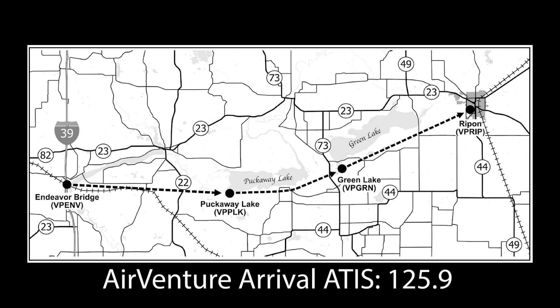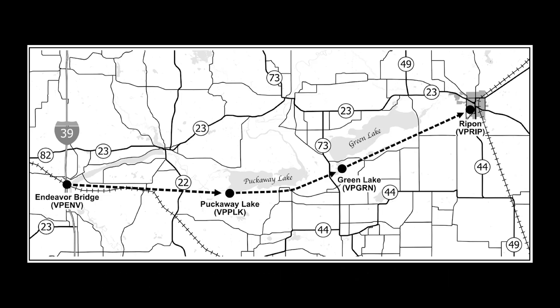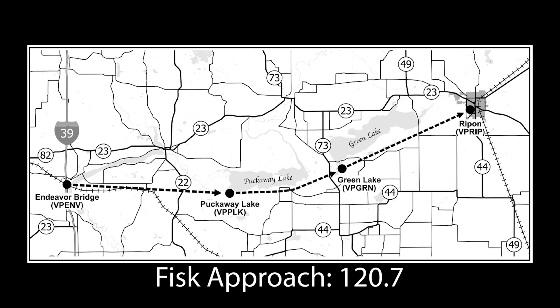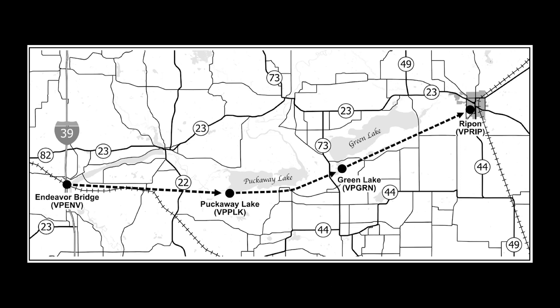When within 100 miles of Oshkosh, you want to listen to the AirVenture arrival ATIS, 125.9, and verify that the Oshkosh airport is open and accepting your type of aircraft. Otherwise, you'll need to divert to a different airport. The ATIS will also specify the transition starting point currently being used. Then you should listen to the FISC approach frequency, 120.7, because the starting point may have been updated. Once you know the starting point in use, you can navigate to it.